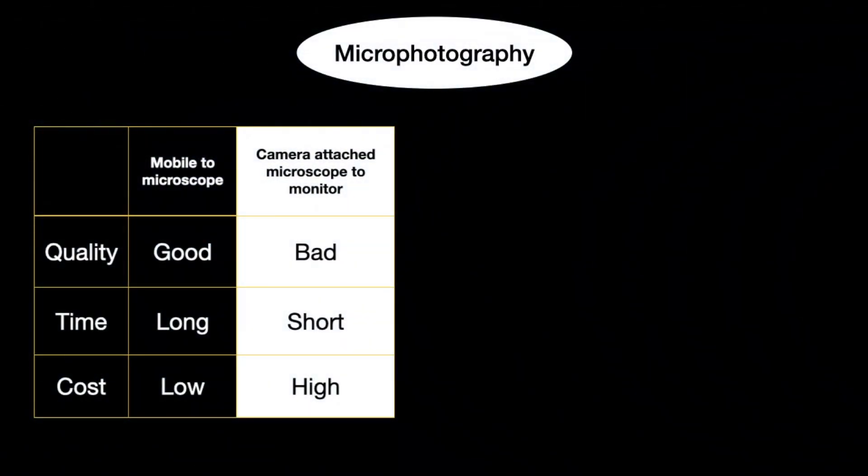The second method is a camera attached to the microscope and connected to a monitor. You take the picture through the camera and view it on the monitor. The quality is poor — it shows lines and surrounding artifacts and cannot be edited well. The advantage is speed; however, cost is on the higher side since you need both the camera and monitor attachments.